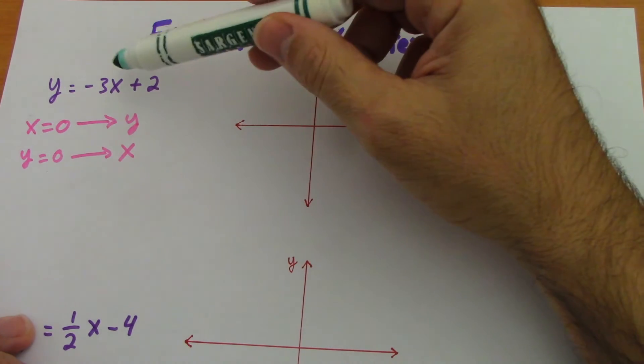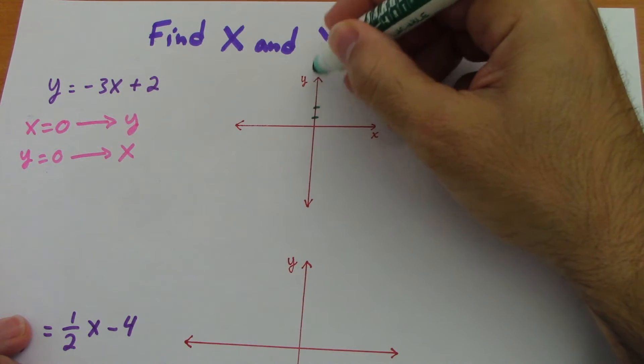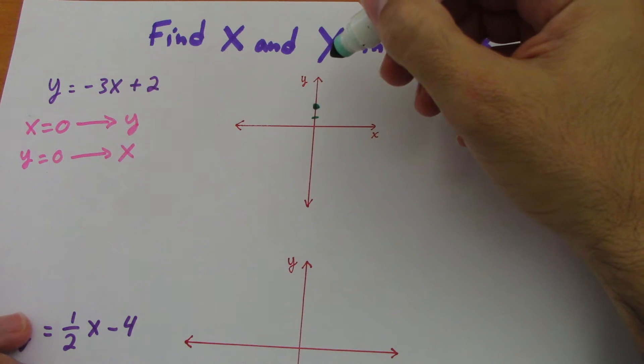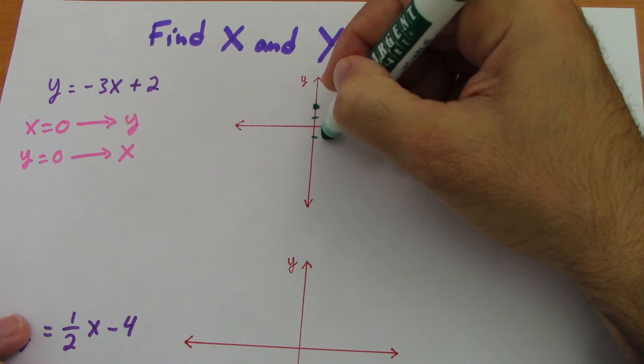y equals negative 3x plus 2. You go to here in the y axis, you go to 2, this is the y intercept, then you go 3 down, 1, 2, 3 down and 1 right.